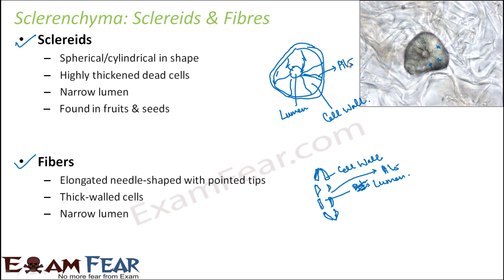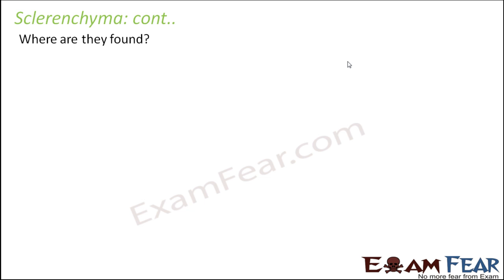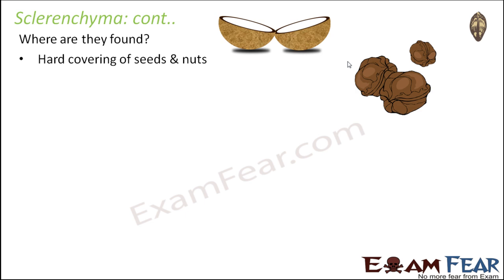The basic difference between sclereids and fibers is that sclereids are generally round in shape, while fibers are generally elongated and needle-shaped. Fibers are found in the vascular tissue of flowering plants, which are nothing but xylem and phloem. Sclerenchyma is found in the hard covering of seeds and fruits. Since they are very stiff and very hard — something like coconut or walnut — their covering is really, really hard. Sclerenchyma tissue is responsible for that stiffness.